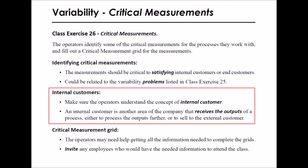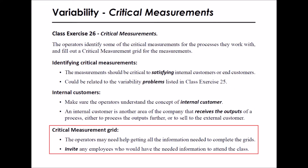Make sure the operators understand the concept of internal customer — another area of the company that receives the outputs of a process, either to process them further or to sell to the external customer. In Part 2 of the exercise, the operators complete a critical measurement grid for one of the measurements using the blank form in the operator workbook. The operators may need help getting all the information needed; invite any employees who have the needed information to attend the class.